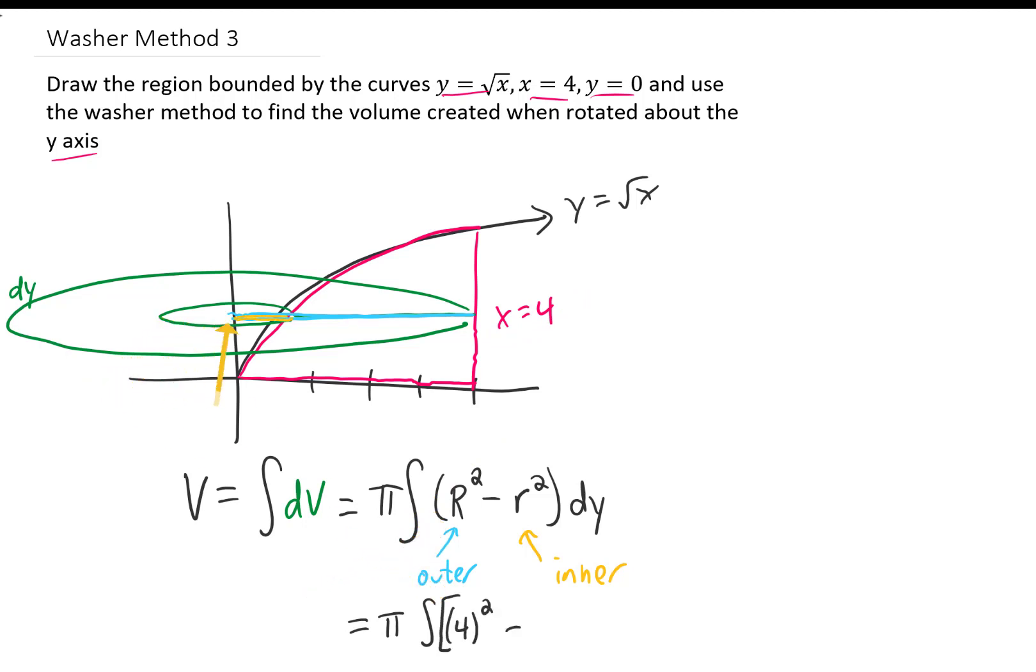Our inner radius is always given by the equation y equals square root of x. No matter where we slice this, the inner radius is given by this function. Of course, we're integrating with respect to y now, so we need to solve for x to get a function of y. We can solve for x by squaring both sides. That gives us x equals y squared.